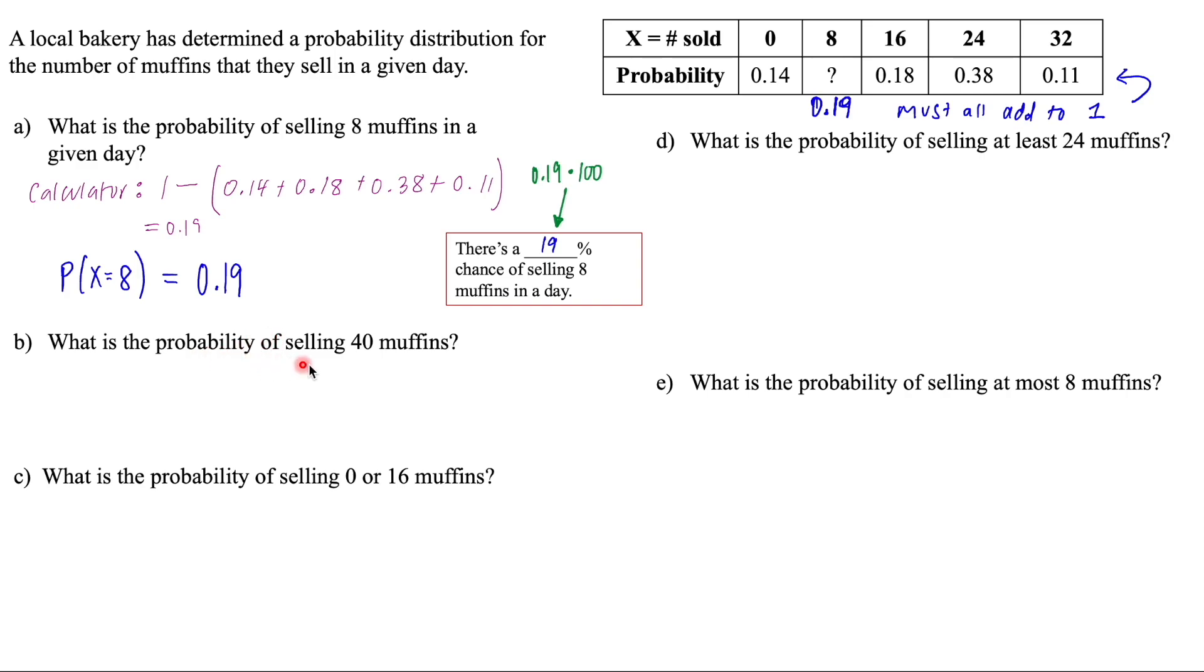What is the probability of selling 40 muffins? So I'm going to come up to my probability distribution, and I'm looking for 40 muffins, and I do not see it in the probability distribution. It is not a possible random variable for this distribution. So that means that this probability is zero,